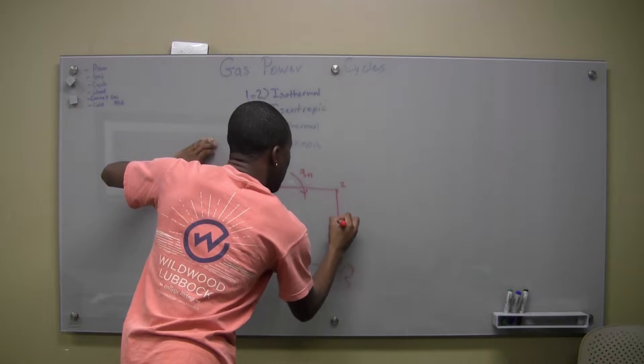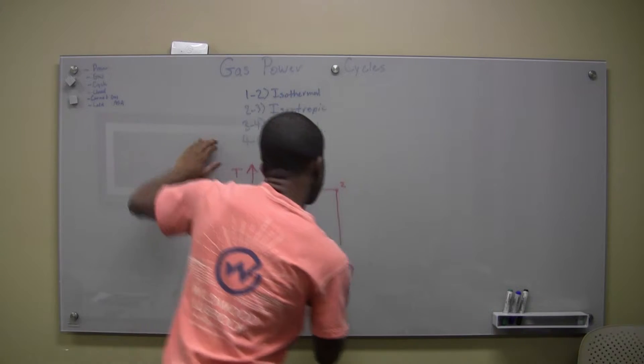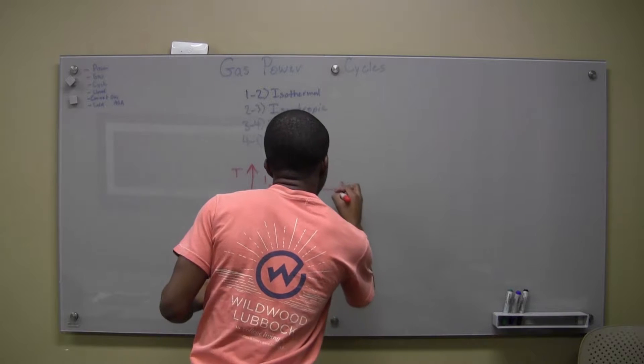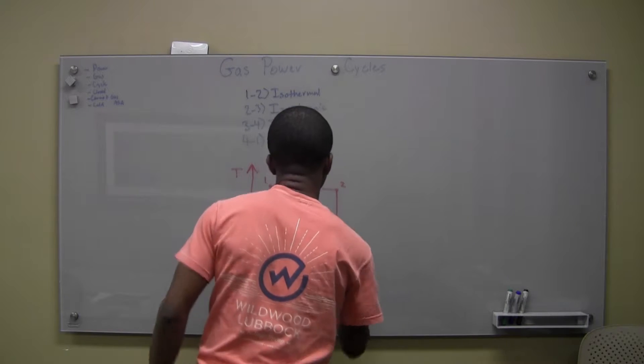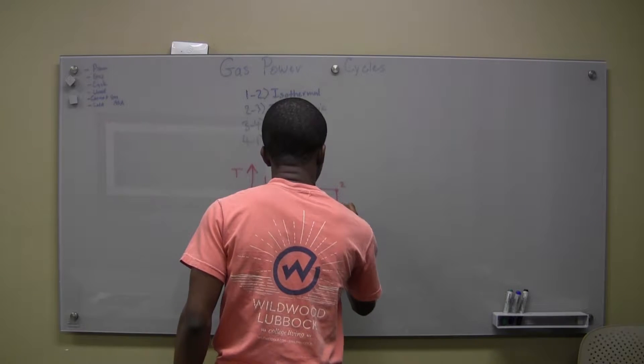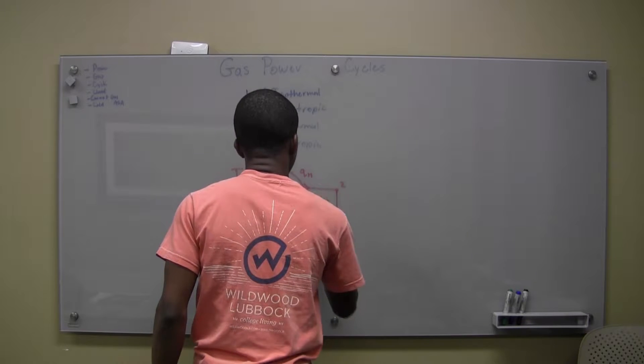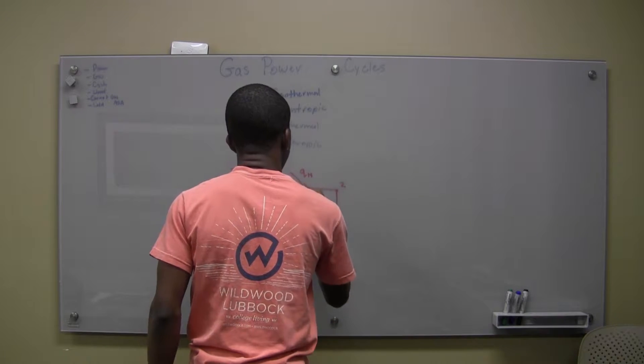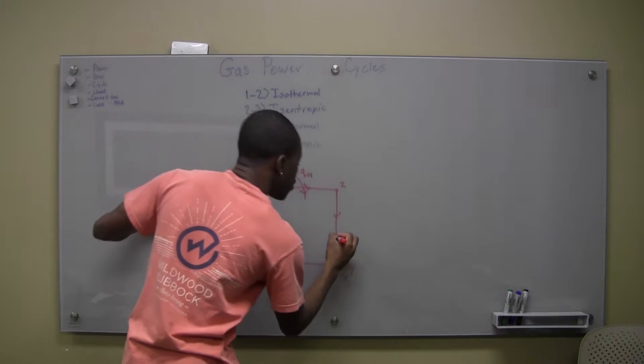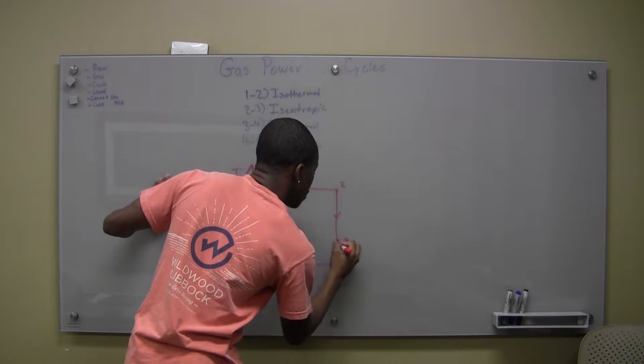And then we're going to get our isentropic process. It's going to be a straight line down, something like that. So we get our isentropic process from two to three.